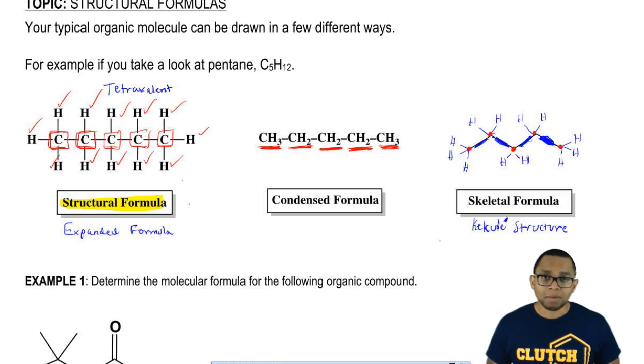We can draw it as a structural formula where we expand all the bonds out, we can draw it as a condensed formula where we push the bonds in, or we can draw it as a skeletal formula where we do not show any carbons or the hydrogens connected to them.